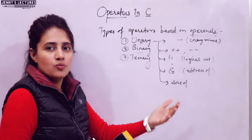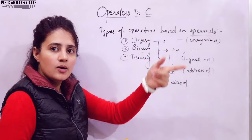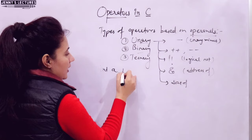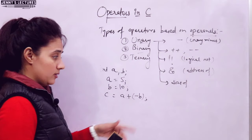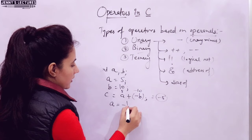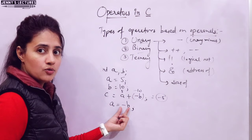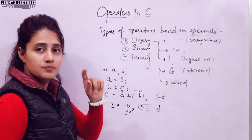Unary minus changes the sign of a value — if positive, it becomes negative; if negative, it becomes positive. For example, if int a = 5 and b = 10, and you write c = a + (-b), then b becomes -10, so the output would be -5. Similarly, writing a = -b assigns -10 to a. This is different from the binary minus operator.